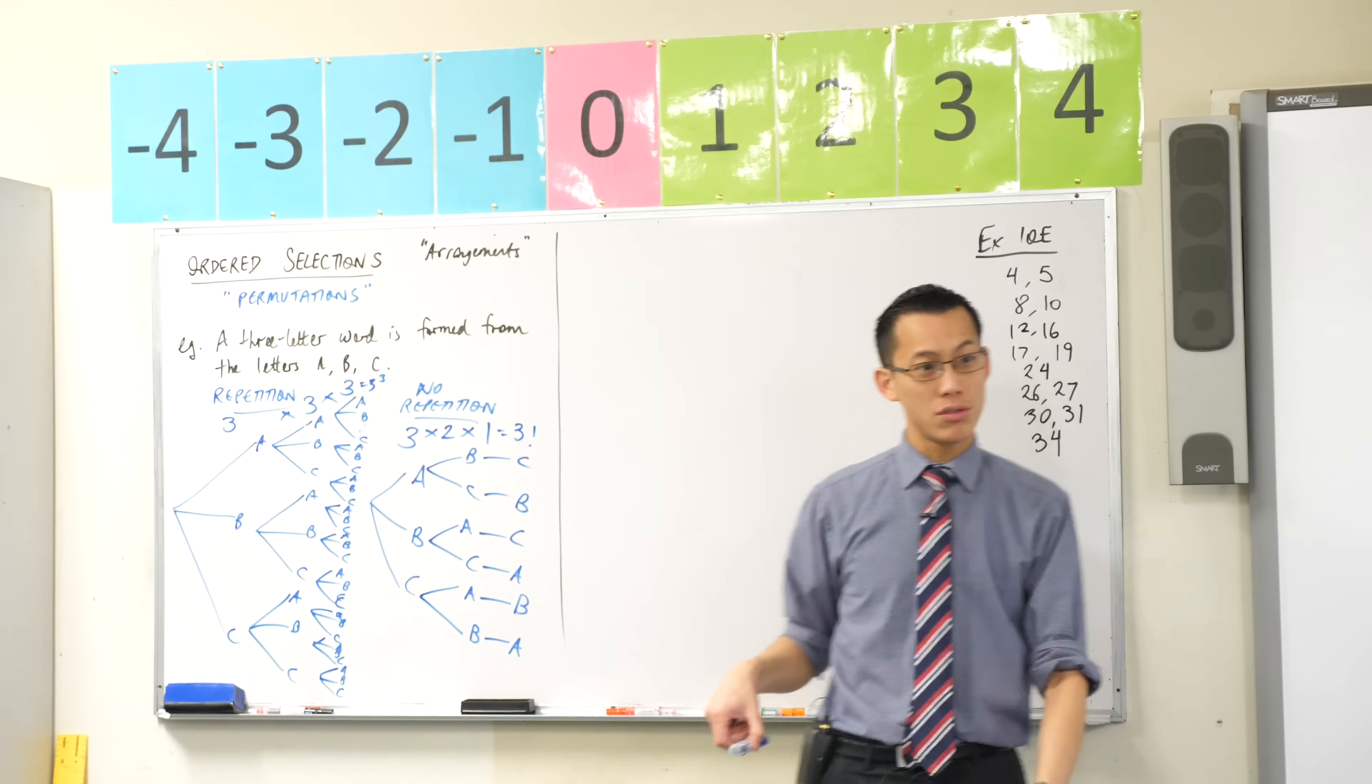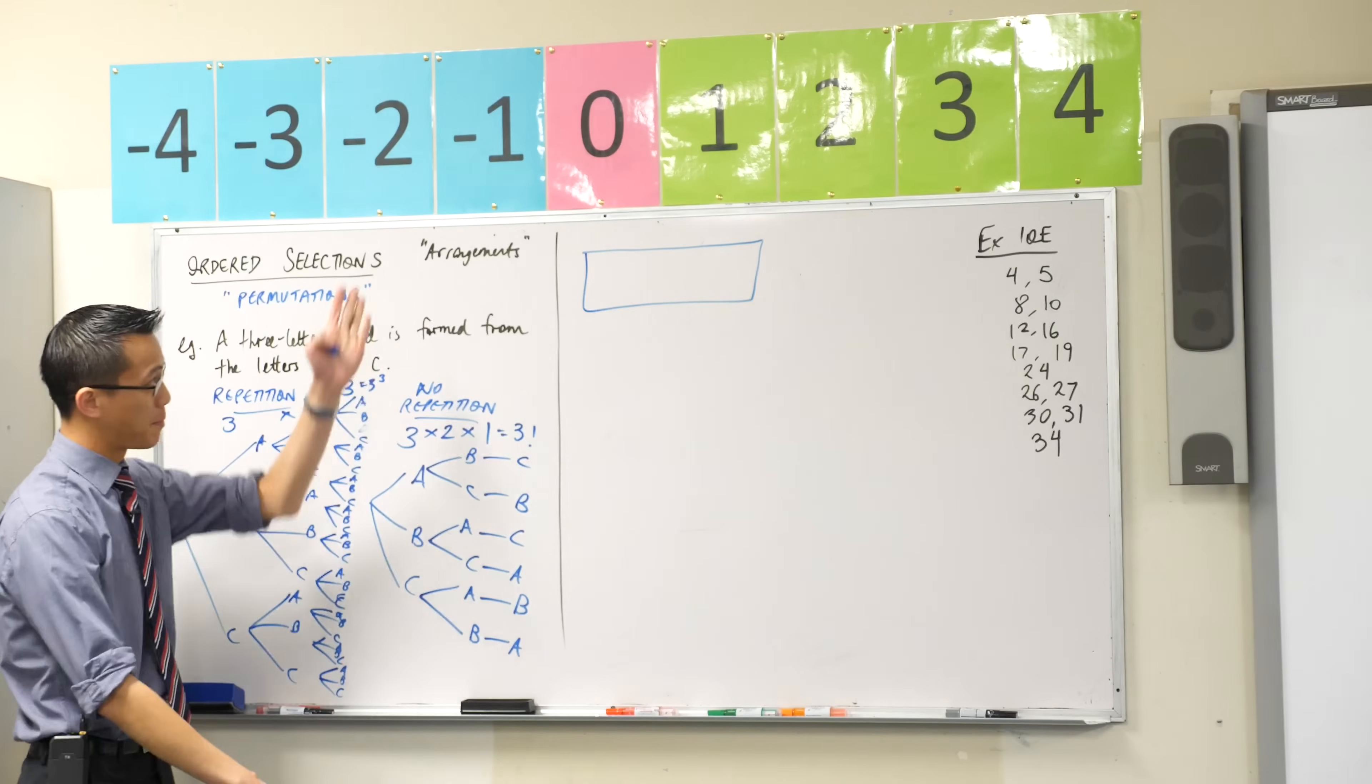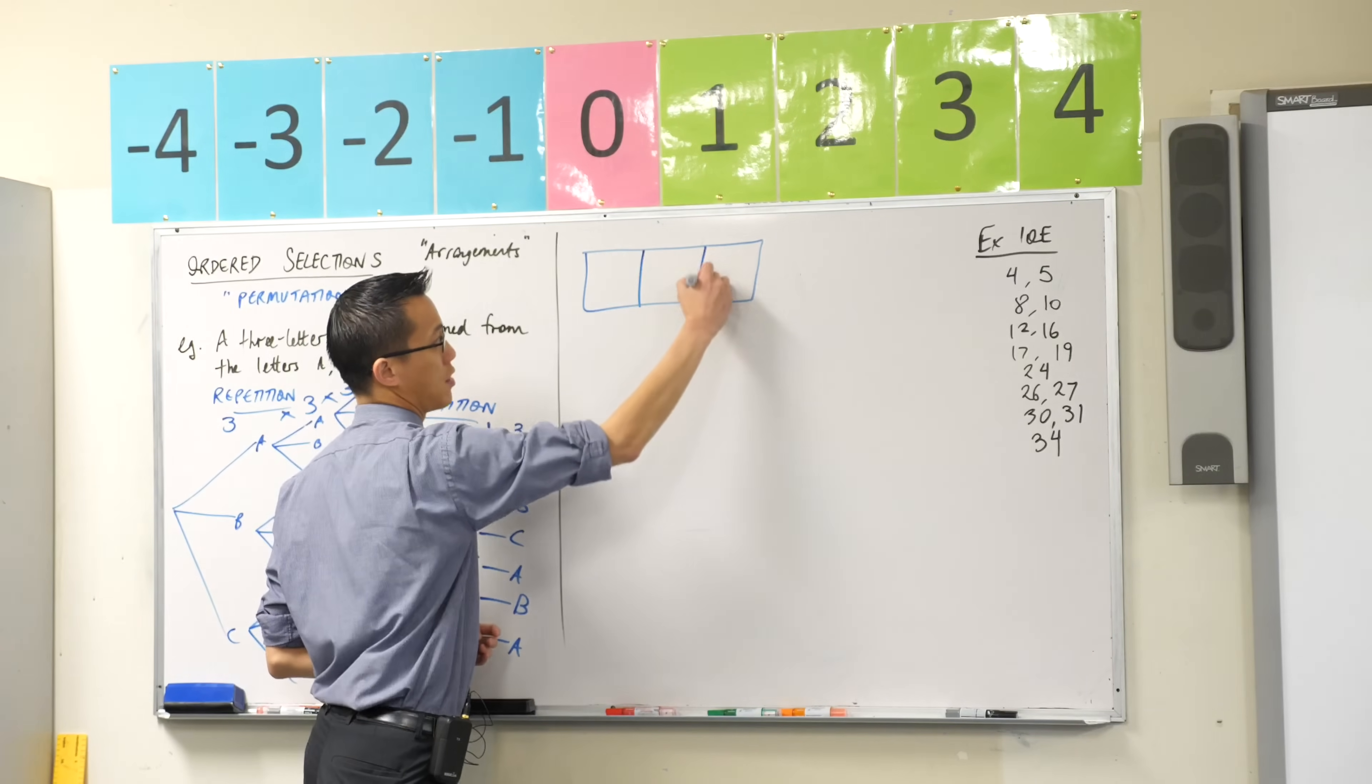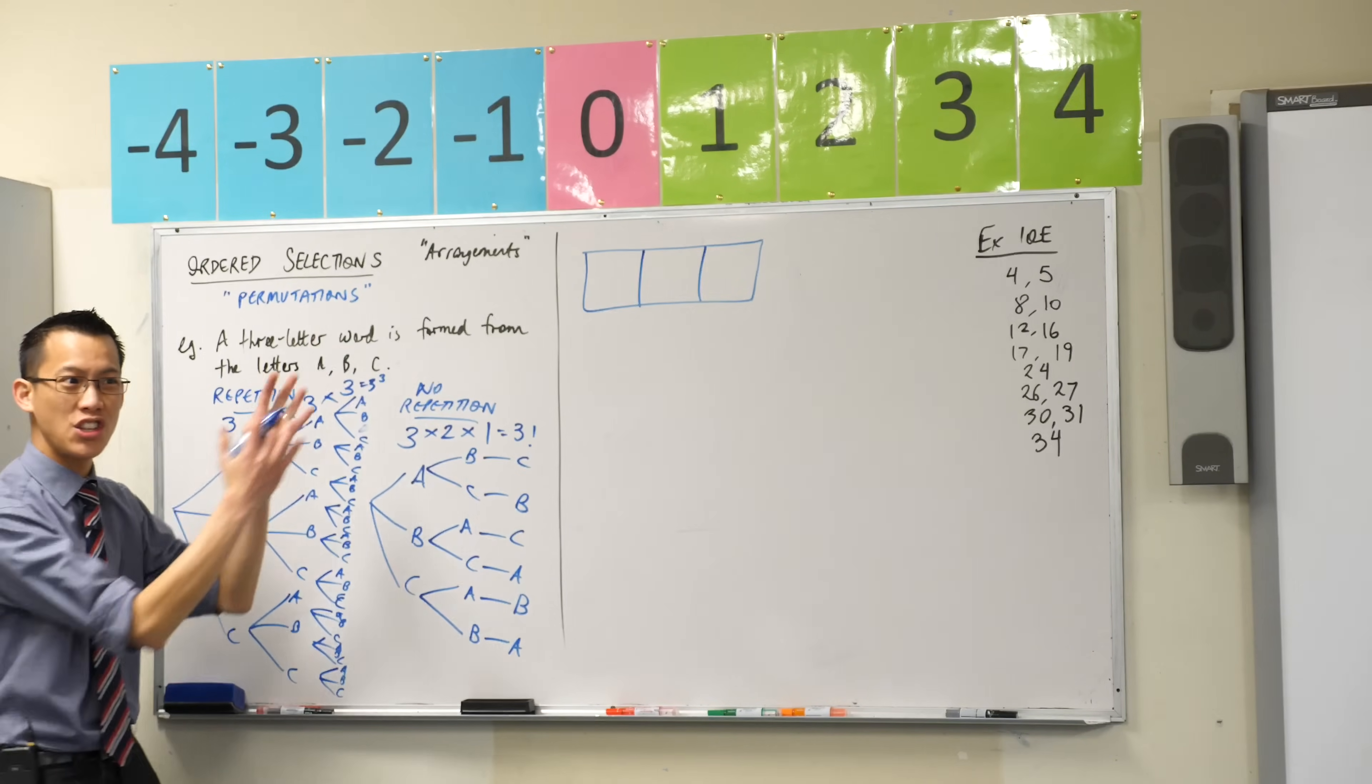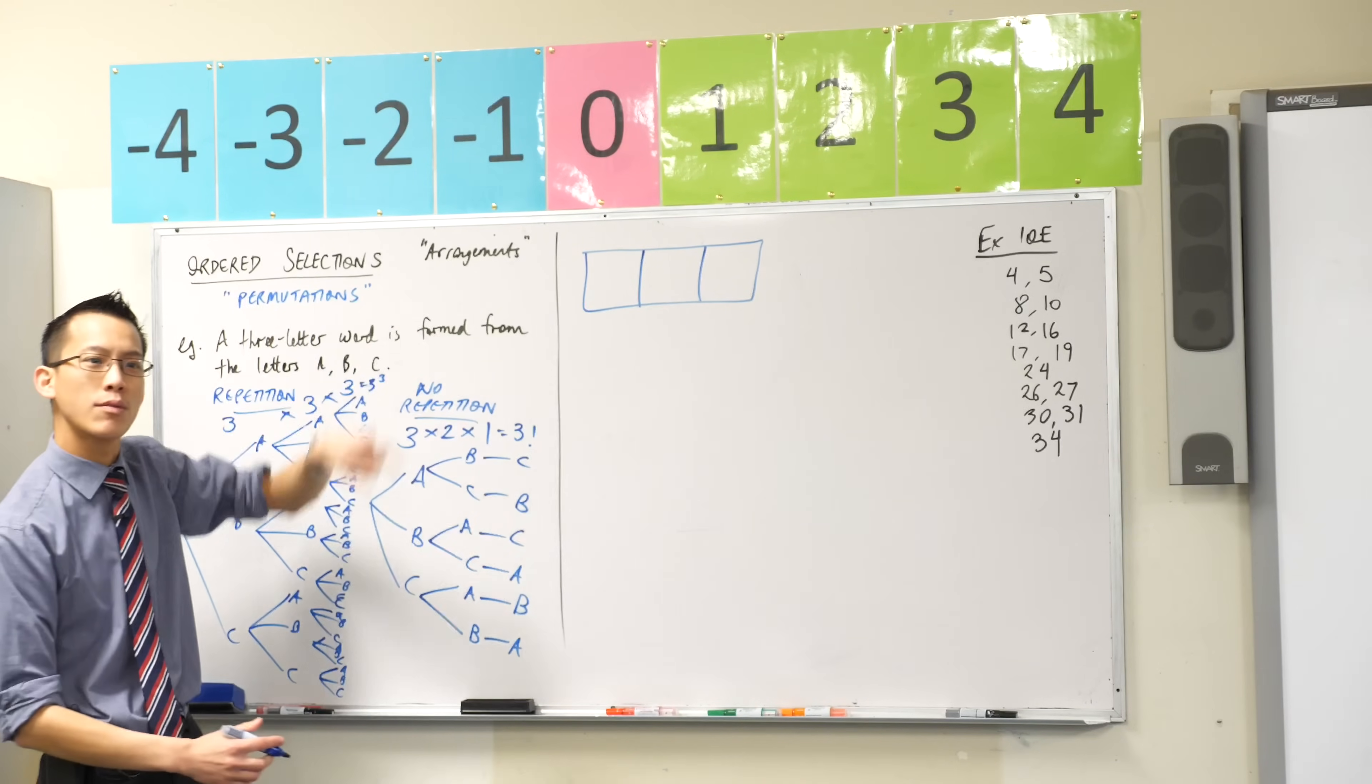So instead, the tool that you'll see that will dominate this is much simpler. Instead we'll just draw a box, and this box has a bunch of slots in it that we fit all of the different items into. So for example, I'm interested in just three letters. So I've got three boxes, three positions to put letters into, and I'm going to state all the same information over here but in a much more concise form.